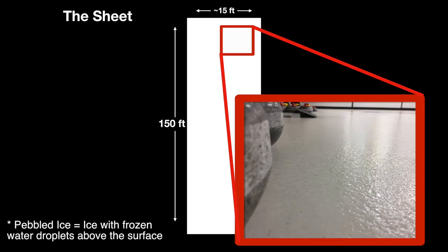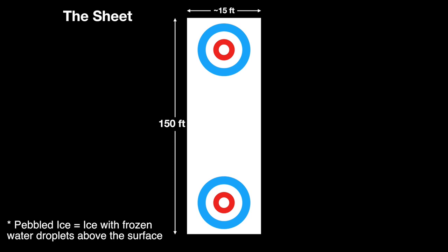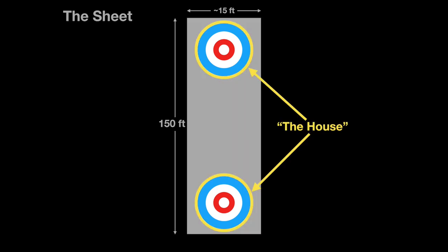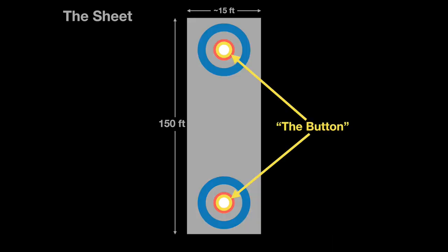The arena is a sheet of pebbled ice that is 150 feet long by approximately 15 feet wide. At the end of each sheet, there are four concentric circles, each called a house. At the center of each house is the button.